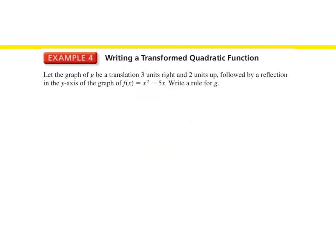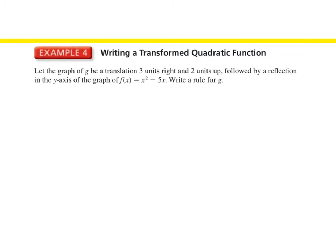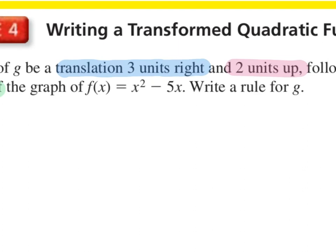In our next example, example 4, we're doing the same thing. We have three transformations: a translation three units right, two units up, and then a reflection in the y-axis. How would we show a translation three units right? Minus 3 on the inside of the parentheses.